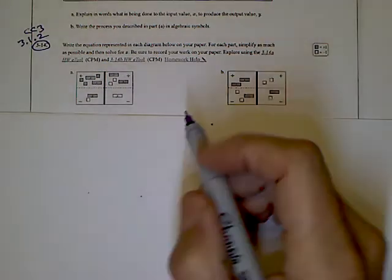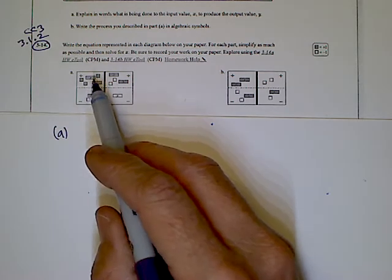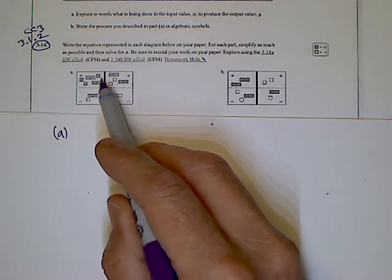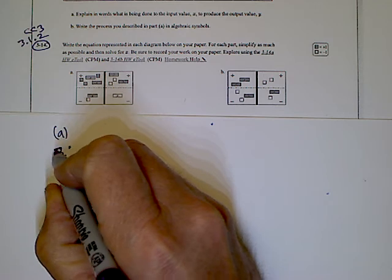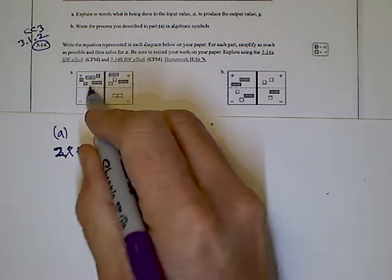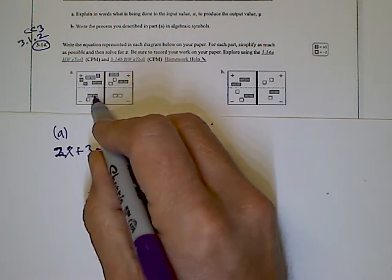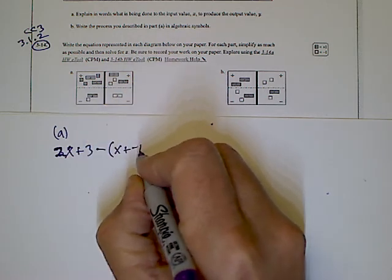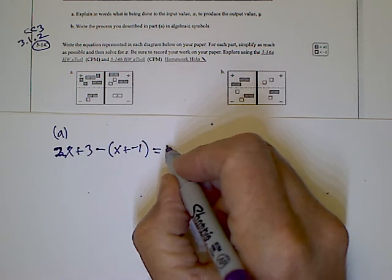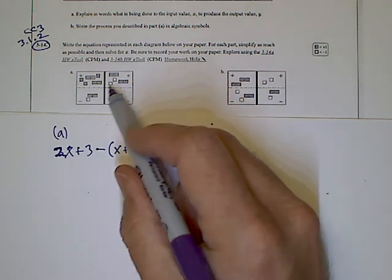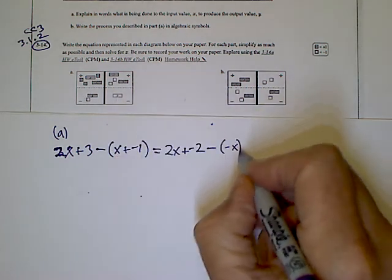For part A, I'm looking at the first side: two positive x's and three positive ones, so that's two x plus three on top. Then minus all of the bottom — the bottom is a positive x and a negative one, so x plus negative one. That side equals the other side, which has two positive x's again.